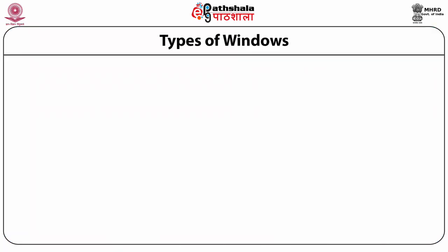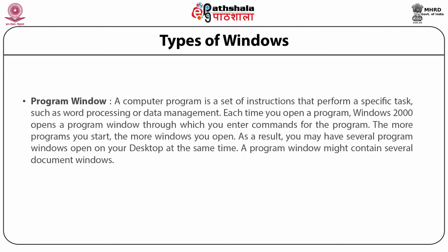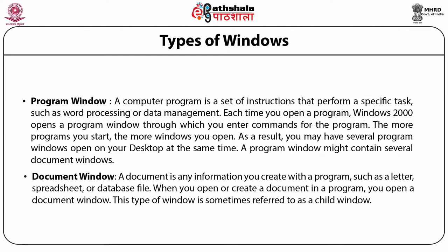A window can be divided as a program window and a document window. A computer program is a set of instructions that performs a specific task, such as a word processing or data management application. Each time you open a program, Windows opens a program window. The more programs you start, the more windows you open — you may have several program windows open at the same time. A document is any information you create with a program such as a letter, spreadsheet, or database file. When you open or create a document in a program, you open a document window, sometimes referred to as a child window.